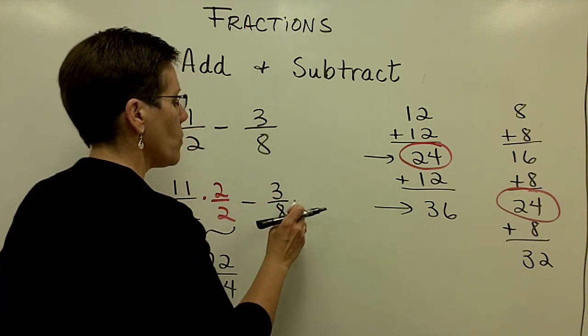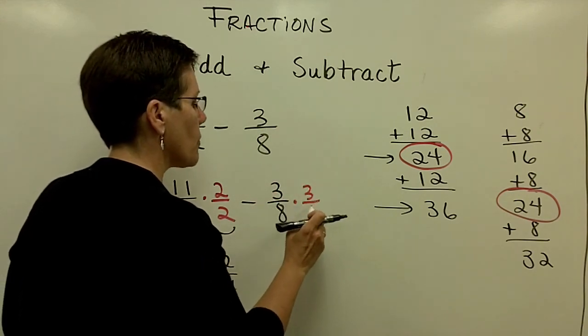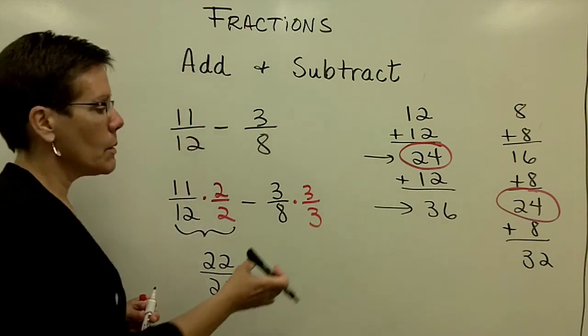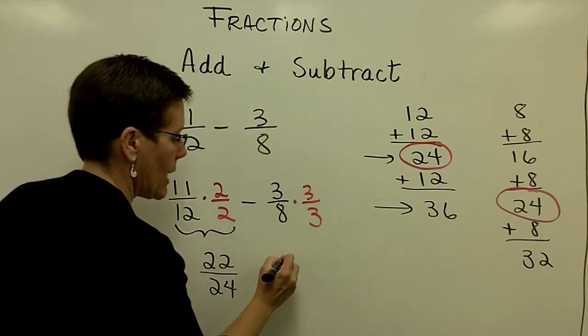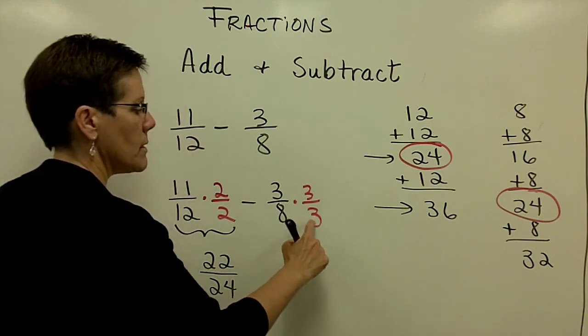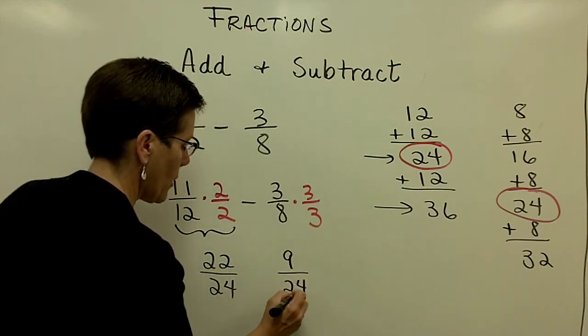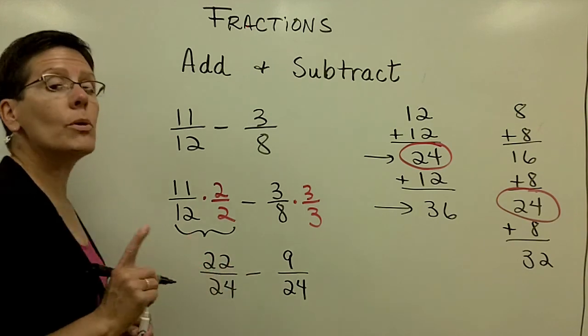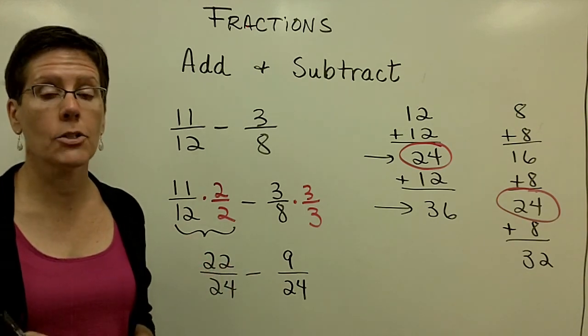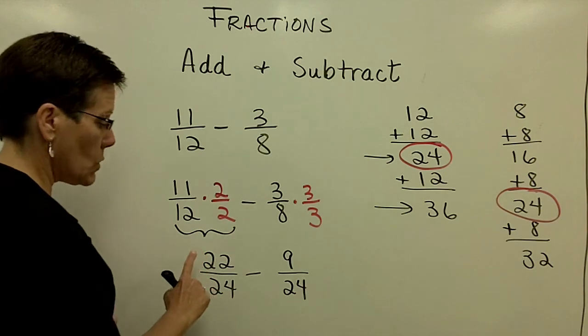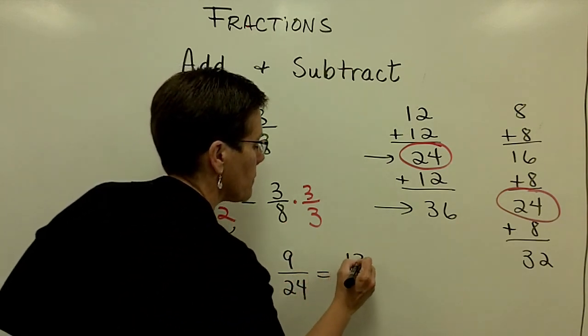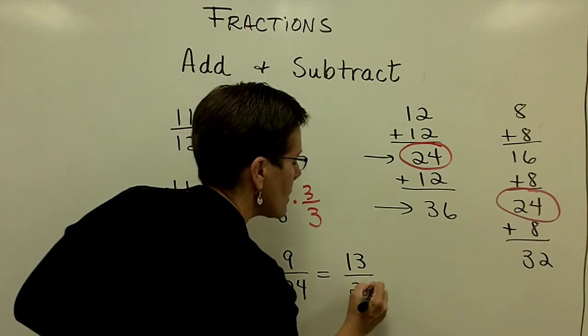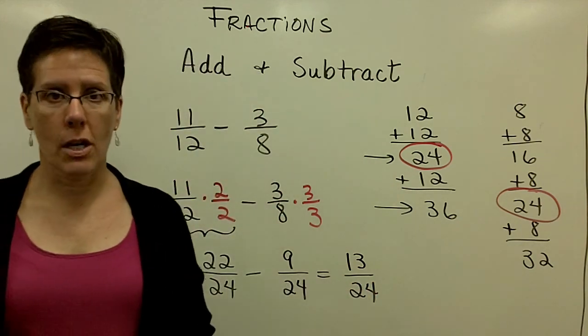The fraction 3/8, you're going to multiply it by 1 in the form of 3 over 3. Because that's equal to 1, its numerator will be 9. Its denominator will be 24. And you are now able to subtract those two because they have a common denominator. You will subtract their numerators. 22 minus 9 is 13 over that common denominator of 24. And you're all done.